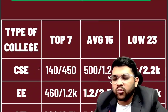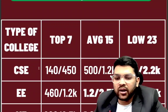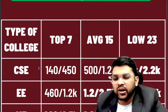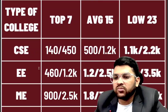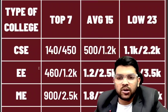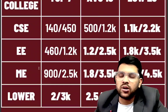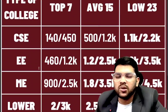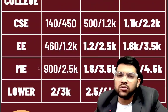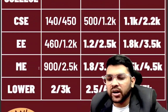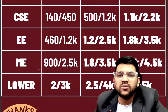For Electrical Engineering at top 7 IITs: rank 460 and 1,200 for male and female. Up to 15 IITs: 1,200 and 2,500. Lower IITs: 1,800 and 3,500. For Mechanical Engineering at top 7: rank 900 and 2,500; average IITs: 1,800 and 3,500; lower IITs: 2,500 and 4,500. To enter any IIT with any branch, top 7 cutoff is around 2,000 and 3,000; average IITs 2,500 and 4,000; lower IITs 3,300 and 5,000 — for male and female respectively.